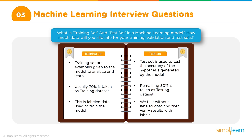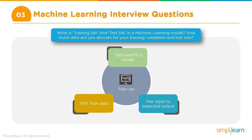One flawed approach is using all thousand records for training and then testing on the same data. The model has already been exposed to all that data, so the results won't be a realistic test. Instead, before starting the training process, we set aside a portion of the data as the test set and use only the remainder for training.